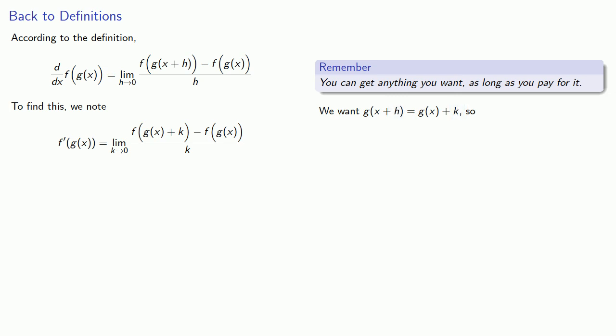Well, we can get anything we want as long as we pay for it. So if we want this, then we know that k itself is g of x plus h minus g of x.